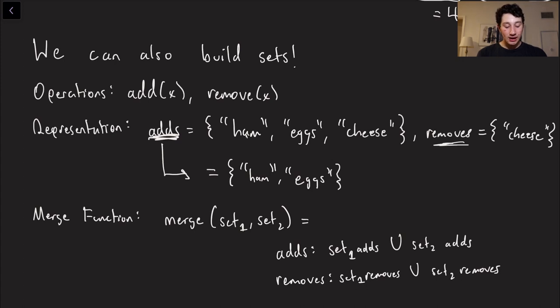And so to actually get the representation of the set on an individual node, you take all of the elements in the adds. So in that case, that would be ham, eggs, and cheese. And then you would get rid of cheese because it's in the remove set. So this works really nicely because now for our merge function, all we actually have to do is take the union of two add sets and the union of two remove sets. And by doing so, we can easily basically have a write conflict-free representation of a set.